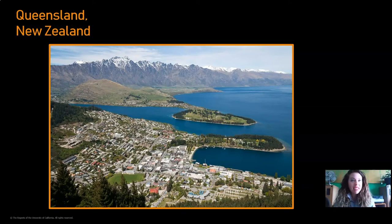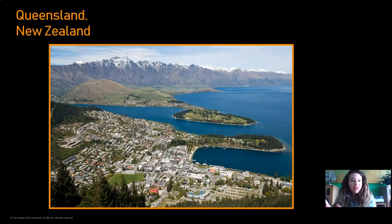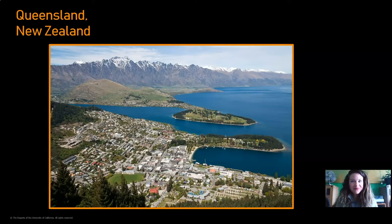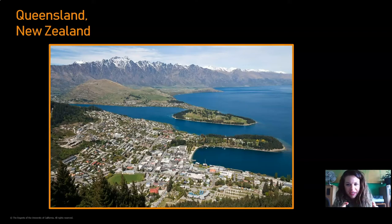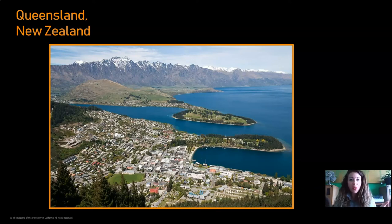This city is called Queensland, and it's in a place called New Zealand, which is really far away on the other side of the world. Take a look at Queensland, New Zealand, and think about what the climate might be like there. Do you think it looks warm, or do you think it looks cool? I think it looks kind of cool. I see that there's snow on the top of the mountains, and I'm also observing that there are some evergreen trees. I know just from living in Seattle that evergreen trees usually grow in places that have cooler climates. So I'm making the prediction that Queensland is going to have a cool temperature. Okay, let's check out the data.